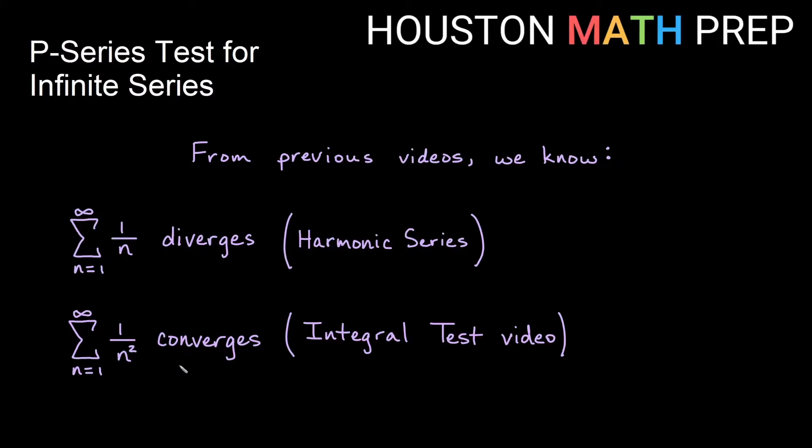We just recently in our integral test video found out that the sum of 1 over n squared converges. These look very similar and yet they have very different behaviors. So what we want to do is develop some sort of shortcut to see how we can tell without having to do a full-on integral test for some of these powers in denominators.